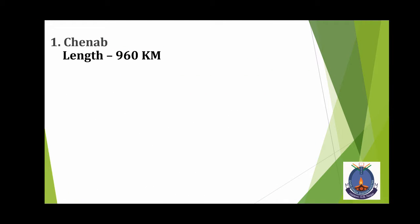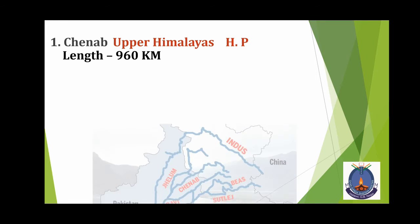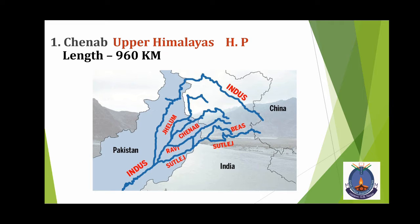First, Chenab. Its origin is where? Upper Himalayas, Himachal Pradesh. And its length is 960 km. You can see Chenab on the map.